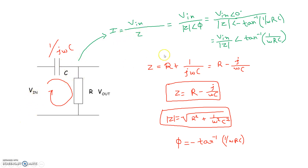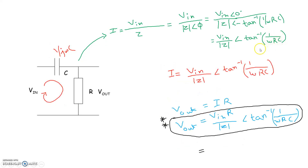The current flowing through the circuit is i = V_in / Z = V_in / (|Z| ∠ φ). Writing V_in at angle zero, we get i = V_in / (|Z| ∠ −tan⁻¹(1/ωRC)). Simplifying, i = V_in / |Z| ∠ tan⁻¹(1/ωRC).